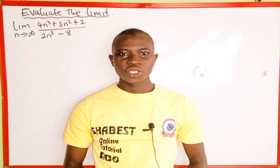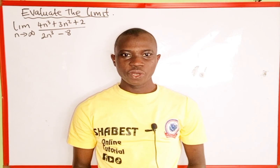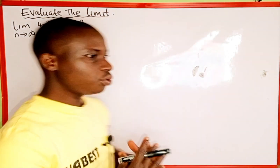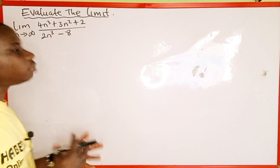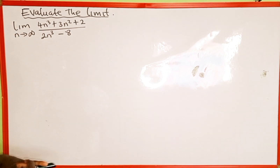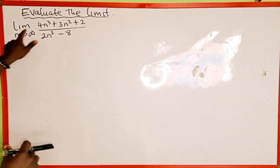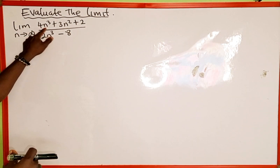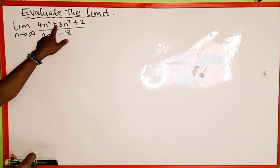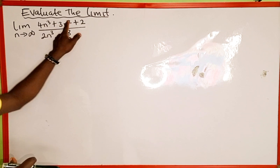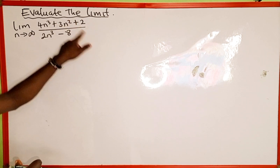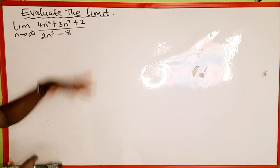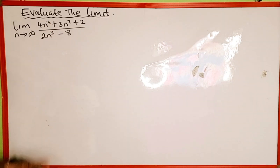Hi guys, welcome back to Shabez online tutorial. In today's tutorial, we're going to learn how to evaluate this limit on the board. The given limit is: limit as n approaches infinity of 4n³ + 3n² + 2, divided by 2n³ − 8.